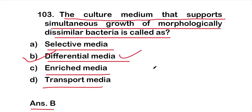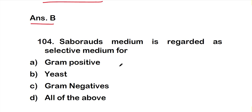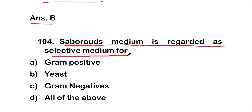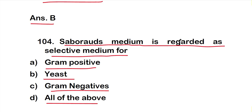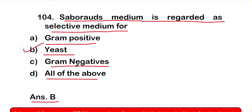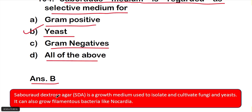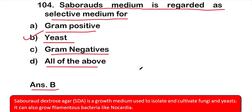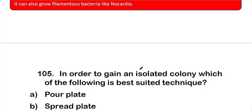Question 104: Sabouraud medium is regarded as selective media for option A, gram-positive bacteria; option B, yeast; option C, gram-negative; or option D, all of the above. The right answer is option B, yeast. Sabouraud dextrose agar is a growth media used to isolate and cultivate fungi and yeast; it can also grow filamentous bacteria like Nocardia.